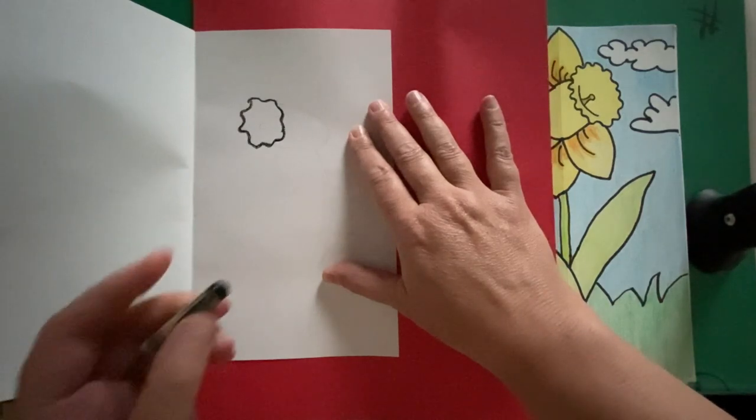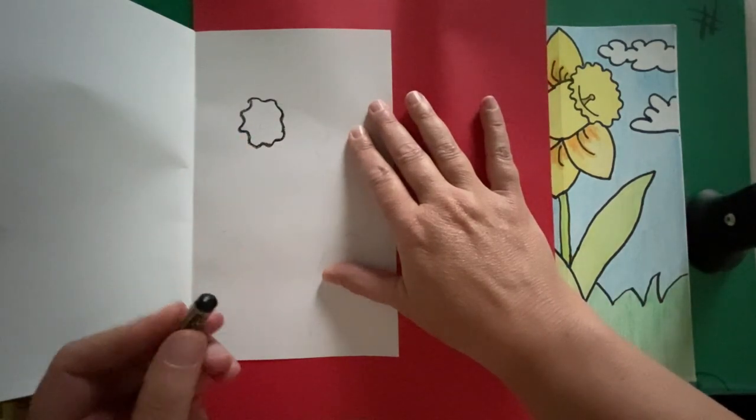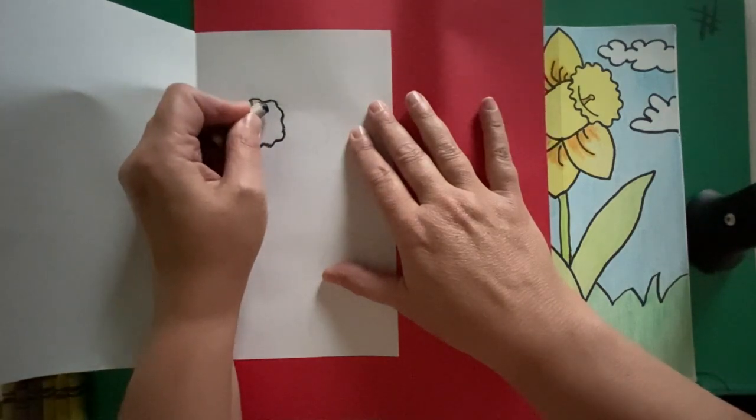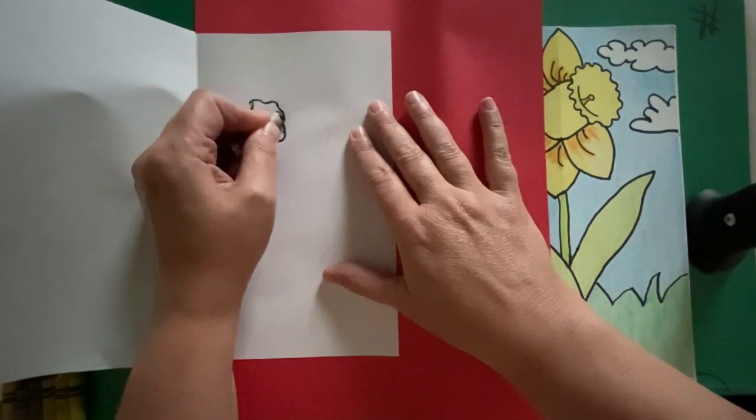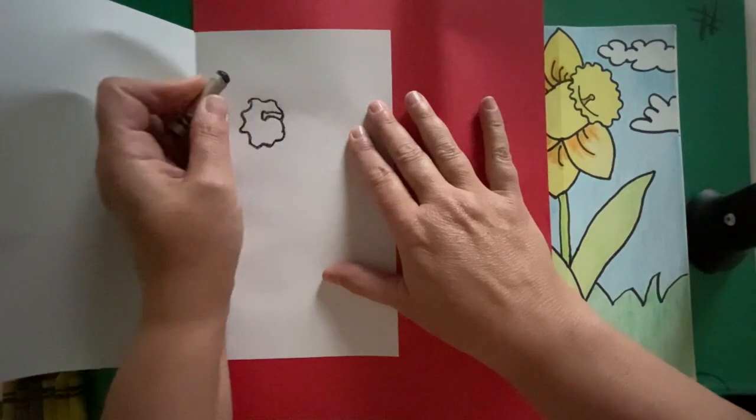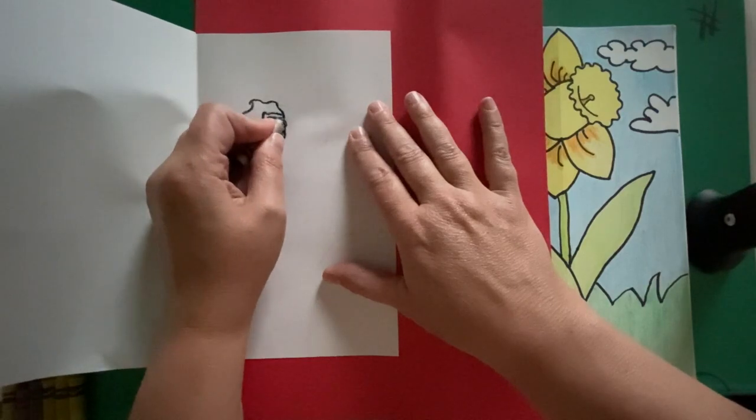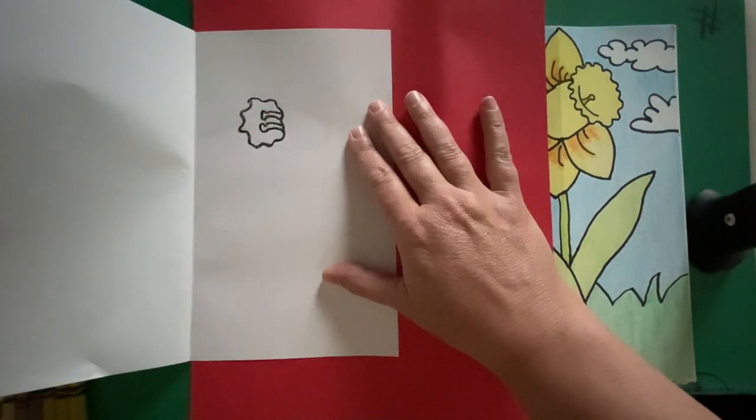All right. Then we're going to draw inside the circle, the two stamen. Inside, they're just kind of easy peasy, lemon squeezy. There you go. There's the two stamen inside.